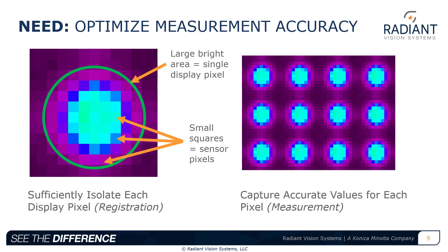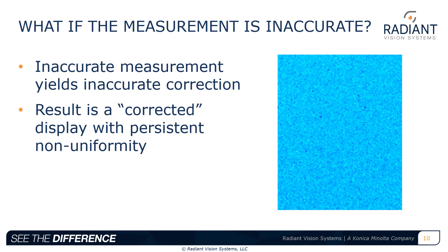So there are two criteria for measurement accuracy. One, the pixel registration must be precise enough to isolate an individual pixel. And two, the pixel measurement must be accurate for each ROI, factoring only the signal produced by a single isolated pixel. What happens if we don't have precise registration or accurate measurement? This means that the calculations we make for correction of each display pixel will be incorrect — this is the garbage-in, garbage-out principle. If we start with bad data, we're going to get a bad result. If we apply corrections based on bad data, this can actually make corrected displays look worse than before, like what's shown on the right.